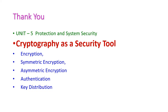In summary, we have seen cryptography as a security tool. Under this topic we covered encryption and its two types — symmetric and asymmetric encryption — followed by authentication and key distribution. For more information, please refer to your textbook. In the next class we will see another important topic from the fifth unit.